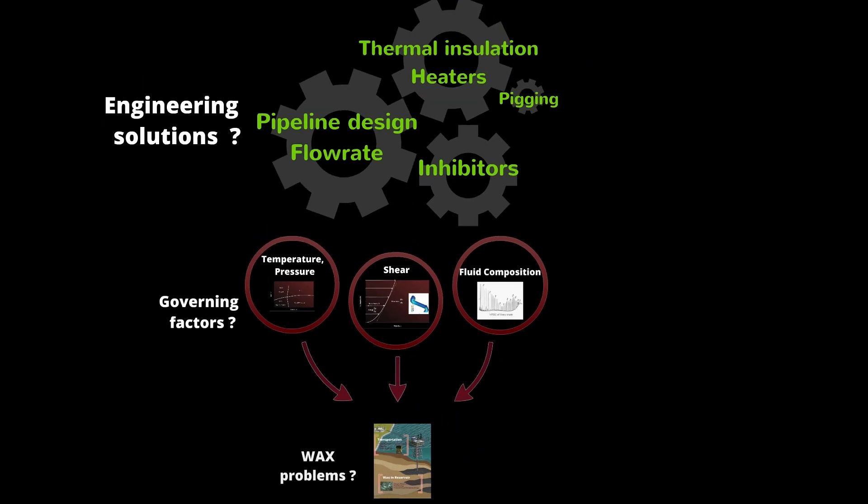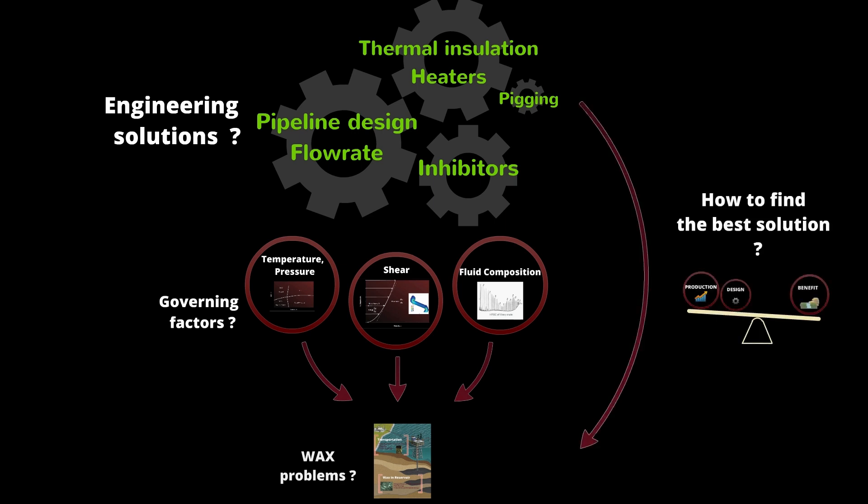Many technical solutions are available in order to prevent wax problems. The design itself of a pipeline with thermal insulation can be an answer. For a long time, treatments with chemicals have been an easy solution. Also, a curative operation is possible during production such as periodic pigging. However, there is still a lack of basic research regarding wax deposition, and it is still difficult to choose an efficient solution.